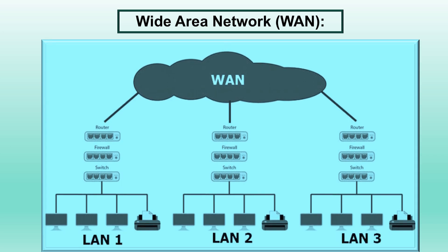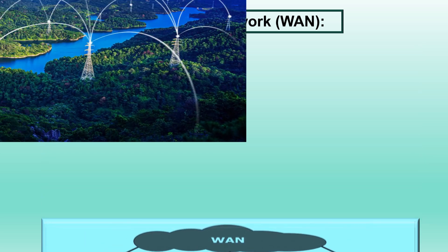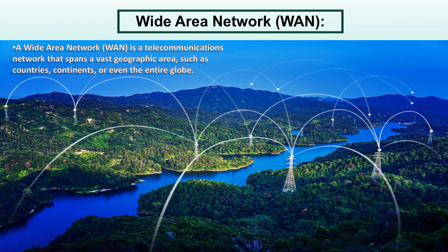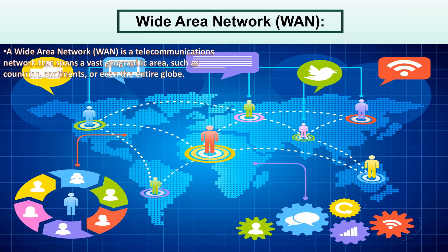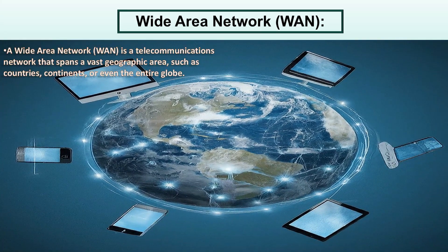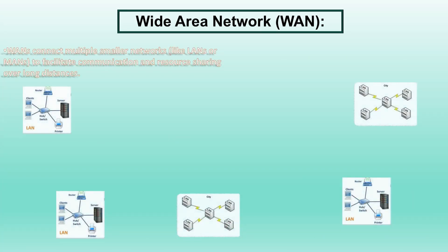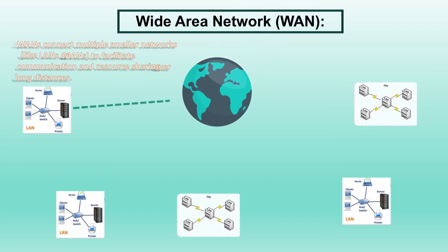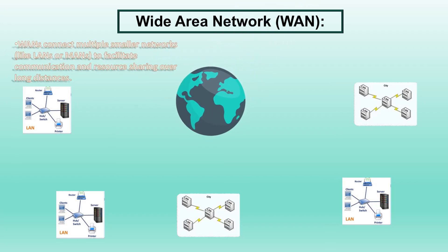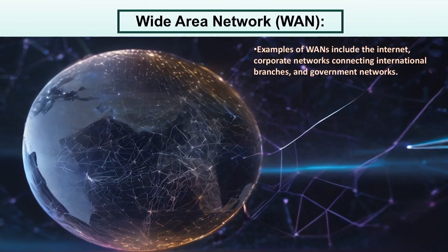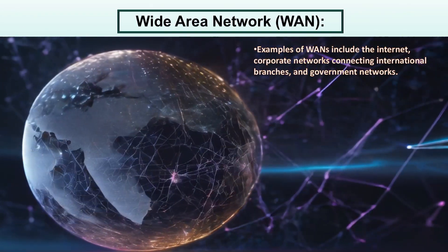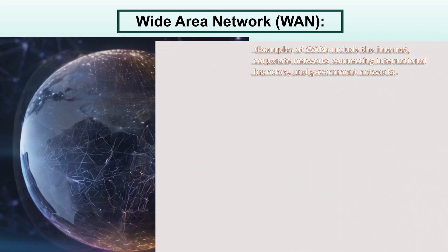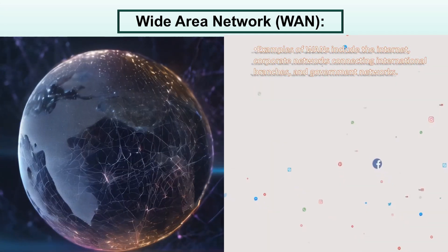A wide area network, WAN, is a telecommunications network that spans a vast geographic area, such as countries, continents, or even the entire globe. WANs connect multiple smaller networks like LANs or MANs to facilitate communication and resource sharing over long distances. Examples of WANs include the internet, corporate networks connecting international branches, and government networks.